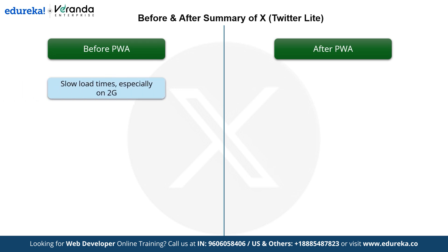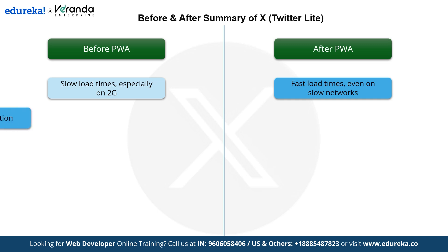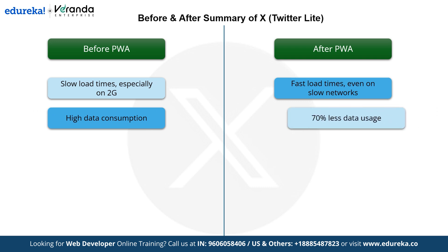Before adopting progressive web apps, Twitter Lite struggled with slow load times, particularly on 2G networks, making the app inaccessible for users in regions with low internet connectivity. After implementing progressive web apps, load times improved significantly, offering a fast and reliable experience even on slower networks and ensuring accessibility for users. Before, the app consumed a high amount of data, creating a barrier for users with restricted or expensive data plans, especially in emerging markets. After implementing progressive web apps, data usage was reduced by 70%, allowing users to enjoy the platform without worrying about excessive data consumption.